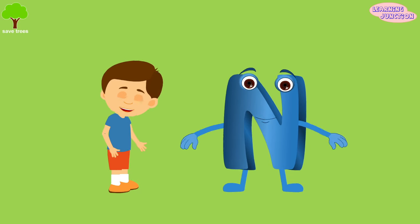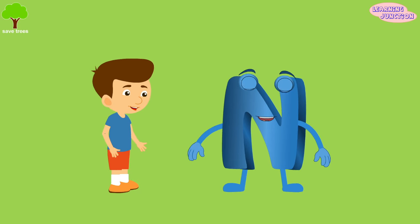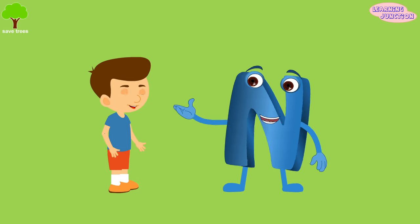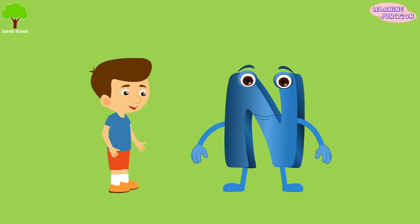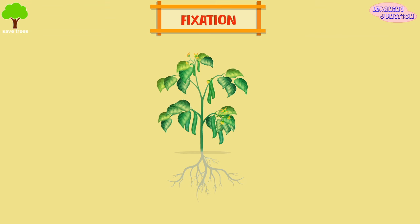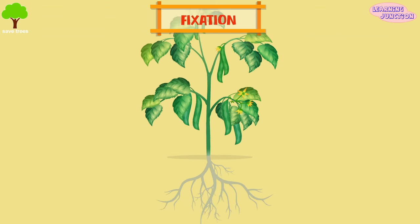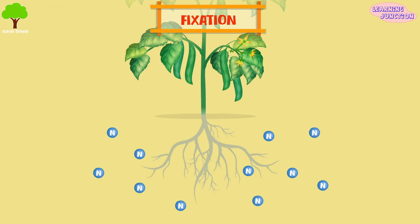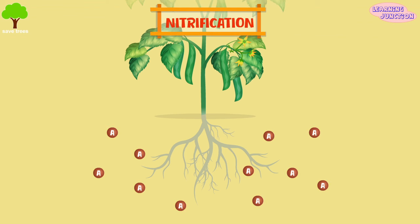Let's see the steps in the process of making nitrogen usable. Fixation — it is the first step in the process of making nitrogen usable by plants. Here, bacteria change nitrogen into the form of ammonium.